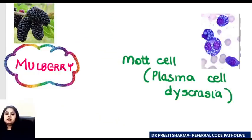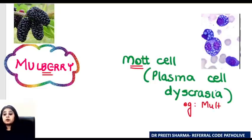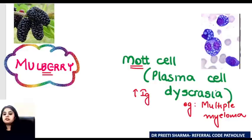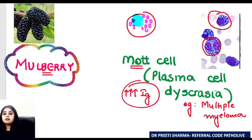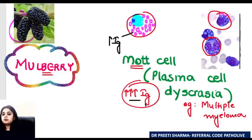For mulberry — mulberry cells, also called Mott cells, are seen in plasma cell dyscrasias. The most famous plasma cell disorder is multiple myeloma. Plasma cell tumors produce lots of antibodies, and these cells have a nucleus plus vacuoles, making the cell look like a berry. The vacuoles are made up of the antibodies being produced and deposited. That is what you call a mulberry body or Mott cell.